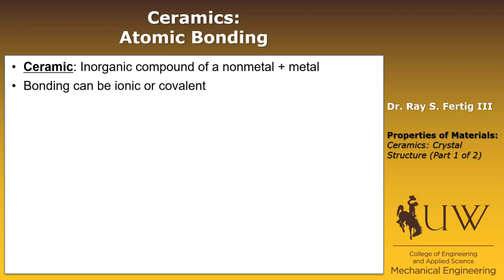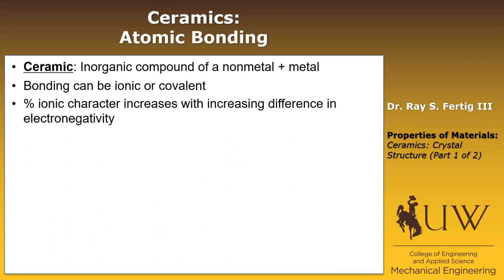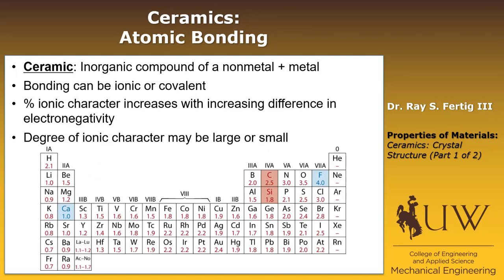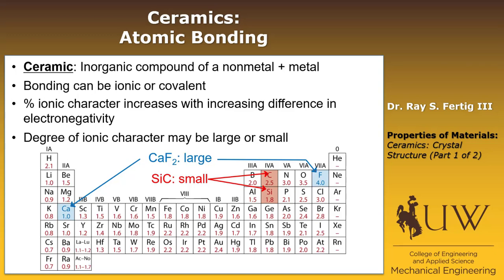Within a ceramic, the bonding can be either ionic or covalent. And just like we talked about at the very beginning of class, the percent ionic character is going to increase with an increasing difference in electronegativity. So if we look at this periodic table showing electronegativities, calcium fluoride with an electronegativity difference of three can have a very large ionic character, where something like silicon carbide with a smaller electronegativity difference is going to have a smaller ionic character — both of which are still ceramic materials.